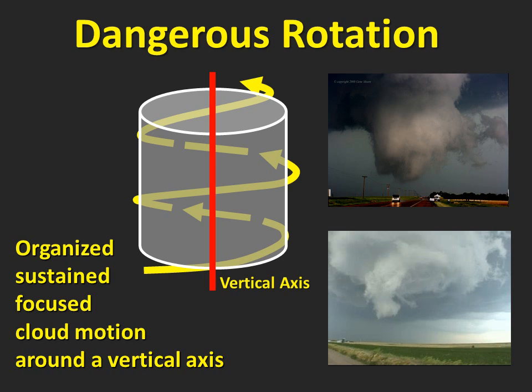Clouds are always moving in and around thunderstorms, and spotters can use that cloud motion to help them know what's going on with the storm. Most of the time, moving clouds aren't anything to be concerned about, but when the clouds are rotating it can be very important. Rotation is defined as organized, sustained, focused cloud motion around a vertical axis.